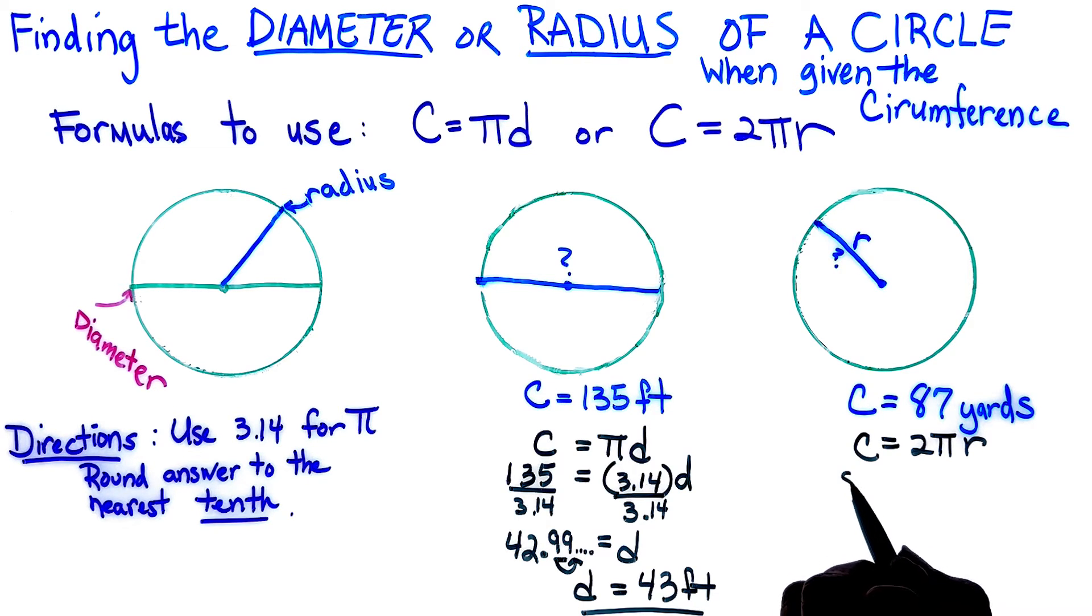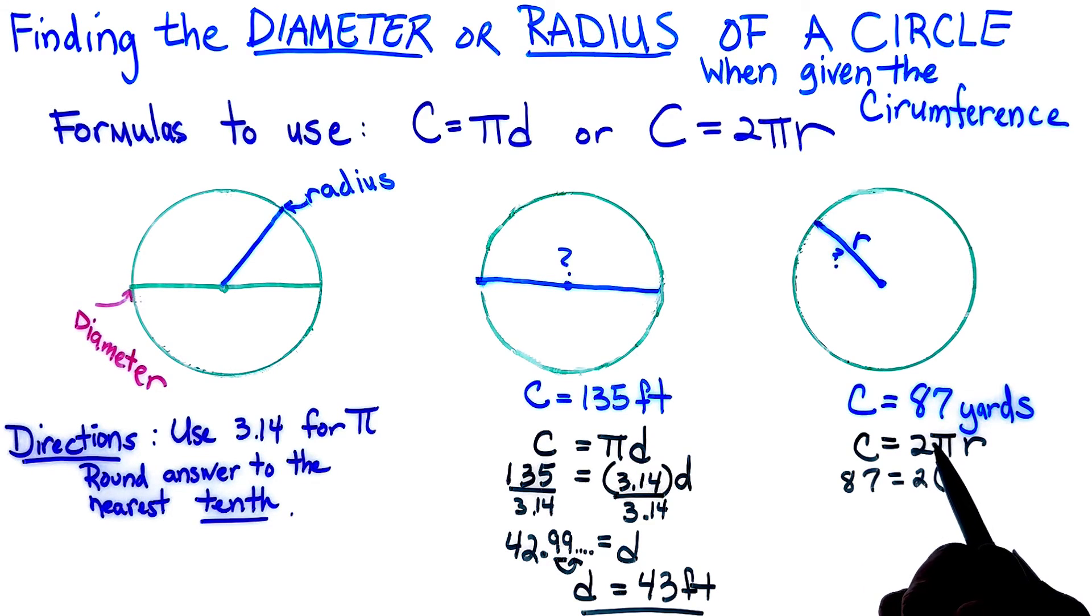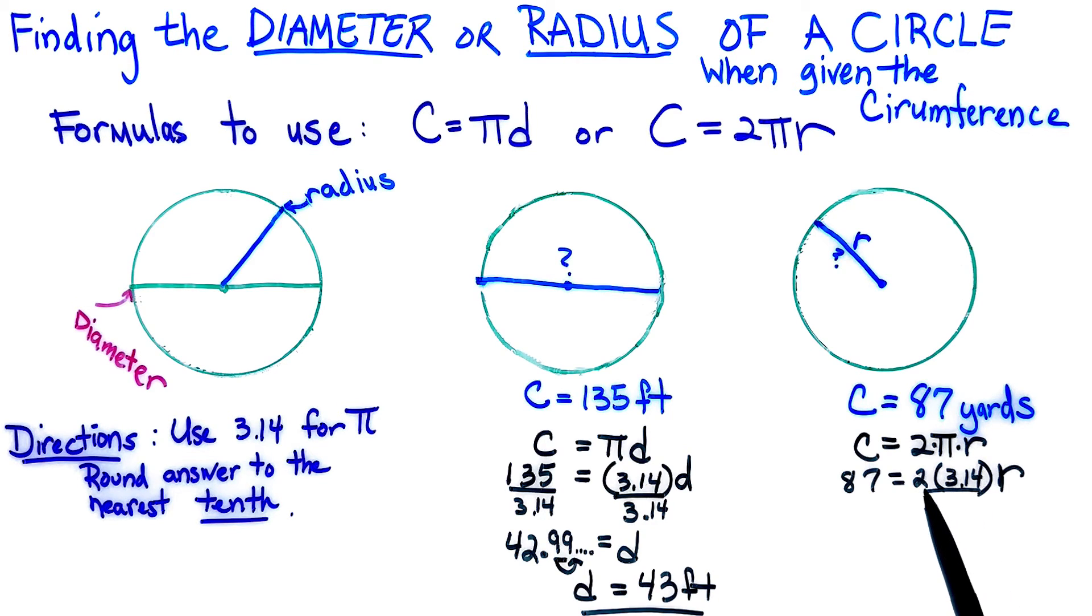My circumference is 87. I have my two, and all these are being multiplied because they're written right beside each other. So I'm putting in 3.14 for my pi, and again, we're finding our radius. In order to find our radius, we are going to have to multiply these two numbers. And it's 87 equals 6.28 times radius.